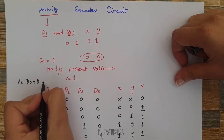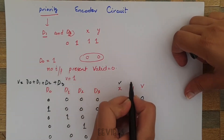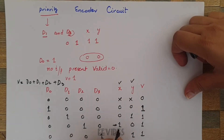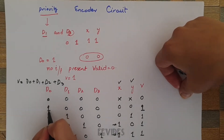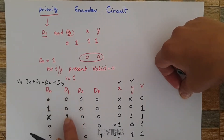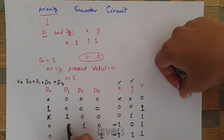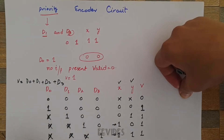V is simply the OR of D0, D1, D2, and D3. For deriving the output functions x and y, we consider the input combinations where each output is 1. When D1 or D3 is the active highest-priority input, D0 is treated as a don't care. When D2=1, D1 is a don't care. When D3=1, all other inputs are don't cares, since D3 has the highest priority.